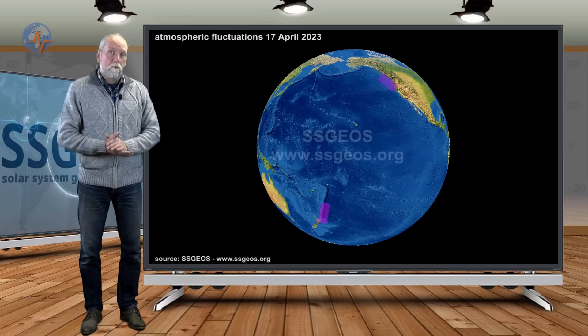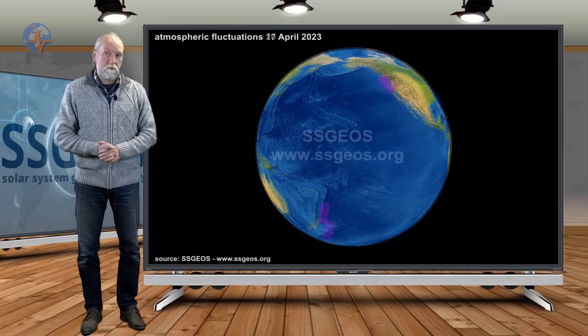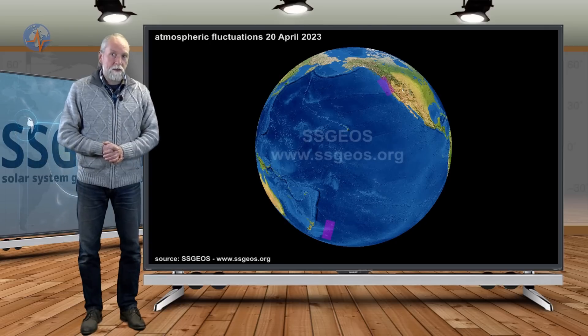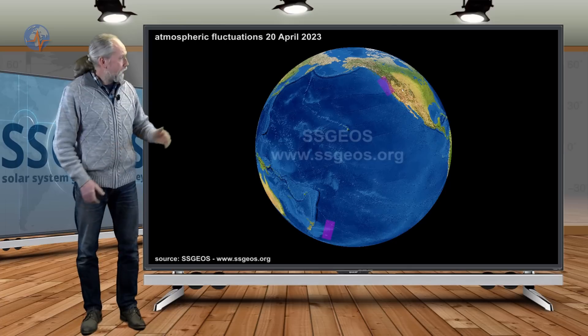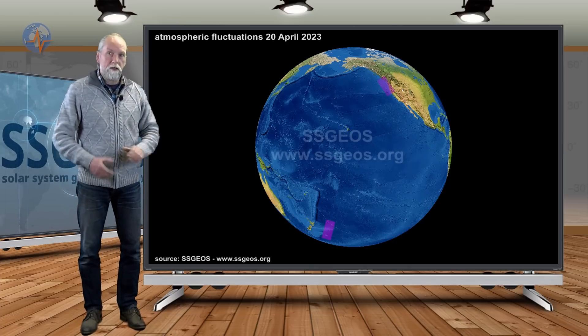We have regions marked also on the 17th. And on top of that yesterday night there were additional fluctuations marking the same regions again. The west coast of North America and close to New Zealand.